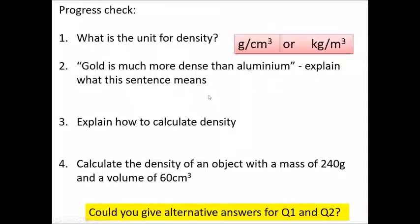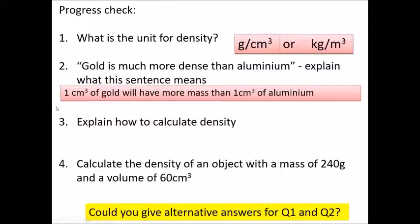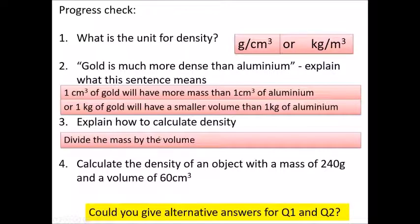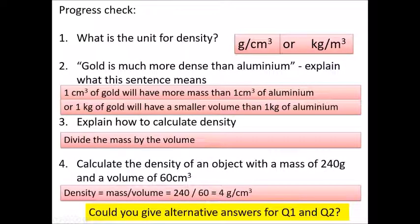Gold is much more dense than aluminium. That means if you've got the same volume — say 1 cm³ — gold will have more mass than 1 cm³ of aluminium. Or if you've got the same mass, then 1 kg of gold has a smaller volume than 1 kg of aluminium. For example, a 240-gram object with a volume of 60 cm³ has a density of 240 divided by 60, which is 4 grams per centimetre cubed.